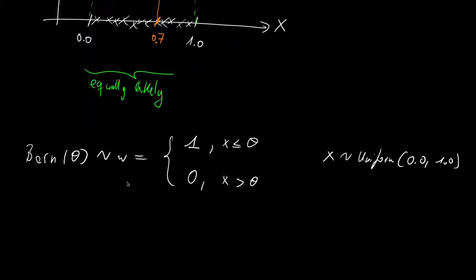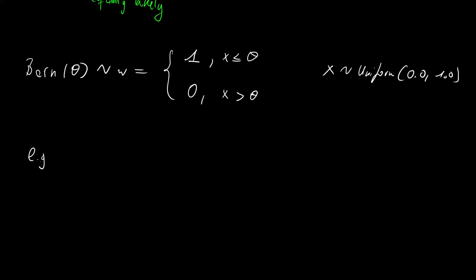And we can look at an example with our theta value of 0.7. So for instance, let's assume we are drawing a data set in x, so for the uniform distribution. And let's say it is given as 0.3, 0.9, 0.75, 0.4, and 0.7.